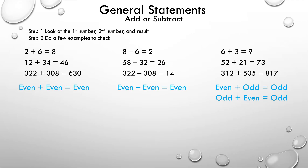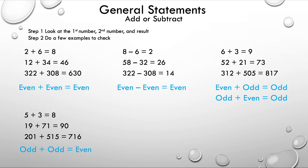I'll leave that for you to verify, but the general statement is also: odd plus even is equal to odd. Now let's look at the next one: 5 plus 3 is 8, 19 plus 71 is 90, and 201 plus 515 equals 716. Looking at the first number, the second number, and the result, the general statement is: odd plus odd is equal to even.